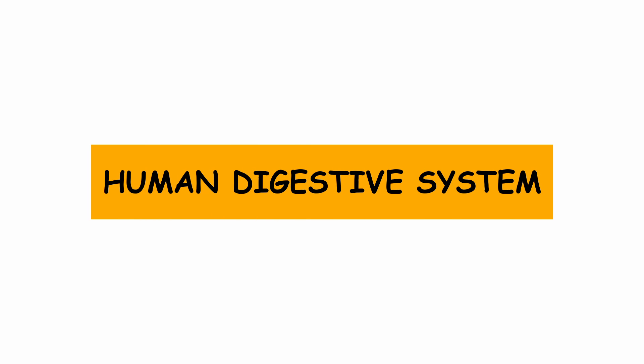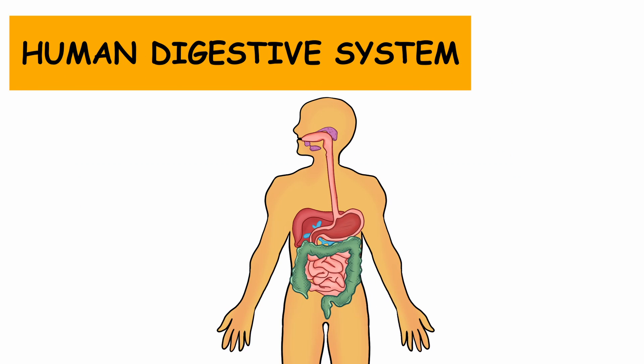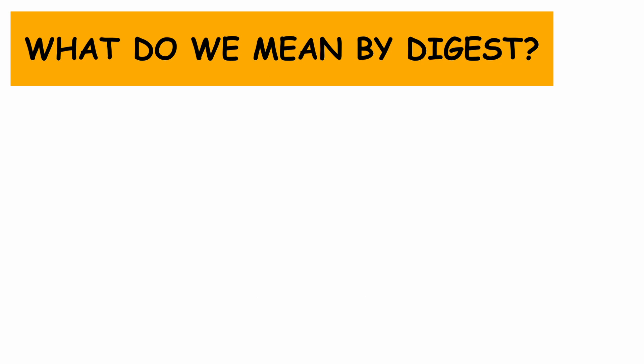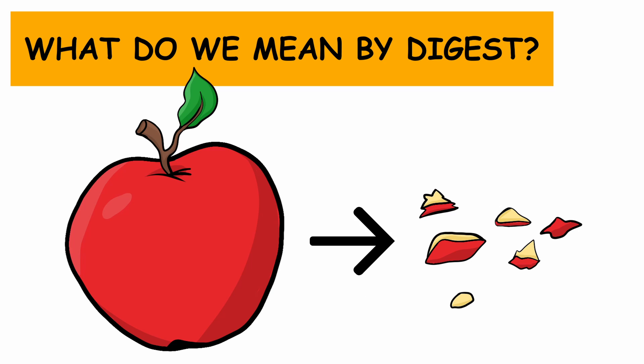In this video, we will take a brief look at the human digestive system. The function of our digestive system is to digest the food that we consume. Now, what do we mean by digest? Digest means to break down food into smaller substances that can be absorbed and used by our cells.